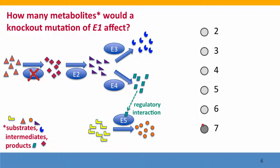The answer is they're all going to be affected. No enzyme 1 means this product won't be made, which means this product won't be made, which means this product won't be made, this product won't be made. This product has a regulatory effect on this reaction, which is going to change the amount of those two products — the substrate and product for that reaction.